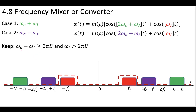As long as we keep omega_c minus omega_i greater than 2π times b, where b is the bandwidth of our original base band message, and also keep the intermediate frequency larger than 2π times b — so our intermediate frequency must be above our base band — and the difference between the carrier and intermediate frequencies must be larger than the bandwidth, then you can completely separate the two components.